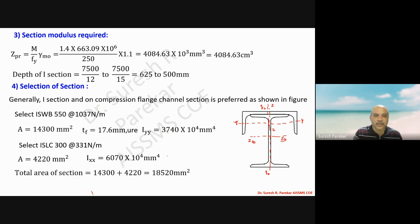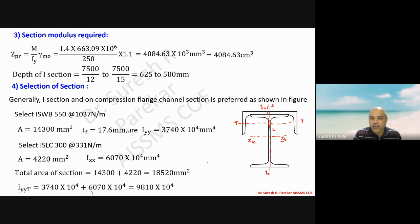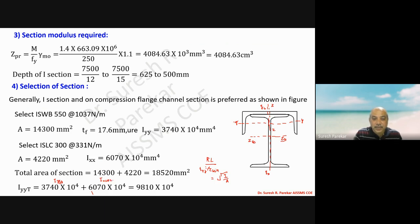Now we calculate the section properties of the channel. For Iyy total of the combined section, we know we need to find KL/r minimum, where r minimum is ryy. We calculate ryy as square root of I over A. Iyy total equals 3740 (Iyy of beam) plus 6070 (Izz of channel), giving a total Iyy of 9810 into 10 to the power 4.